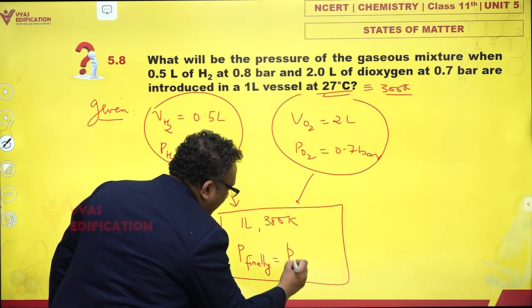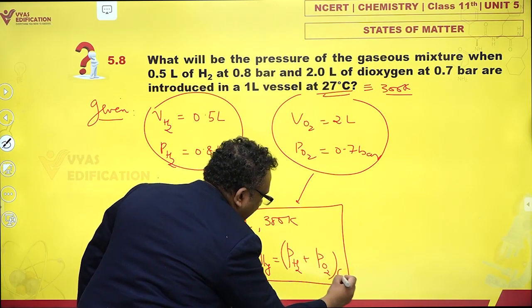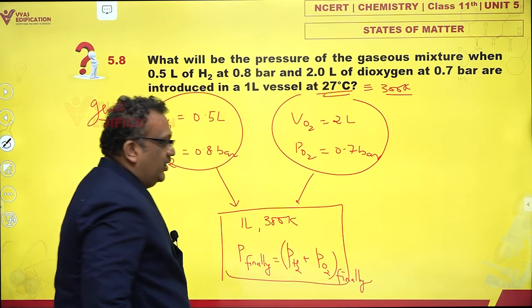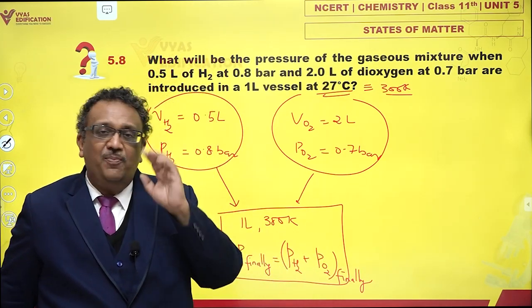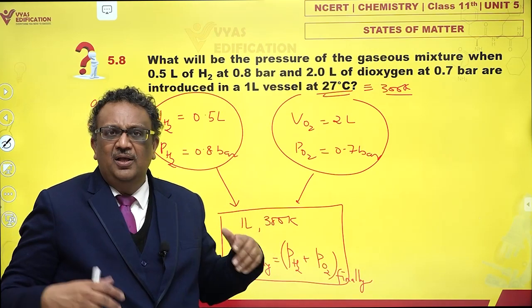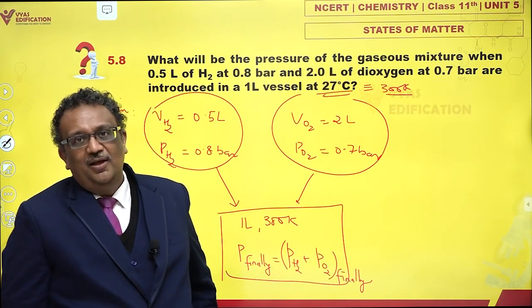Pressure finally is equal to partial pressure of hydrogen plus partial pressure of oxygen finally. So if I just find out what is the partial pressure of hydrogen and oxygen in this vessel, I just add them and I get the final total pressure.